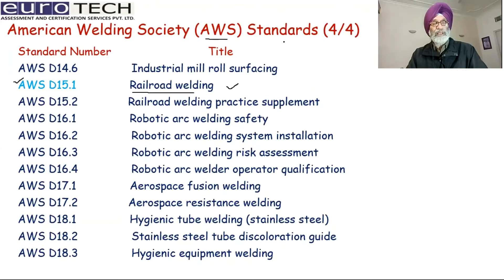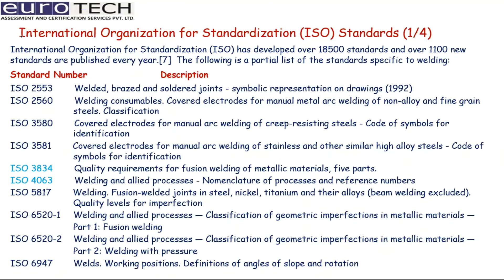Now coming to the next standard — the very famous International Organization for Standardization, that is the ISO standards, which are given across four slides. The important ones: ISO 3834 covers quality requirements for fusion welding of metallic materials, and it has five parts — part one through part five. Part two is basically the comprehensive quality requirements.